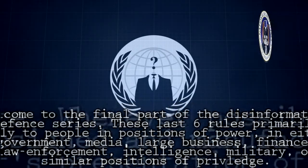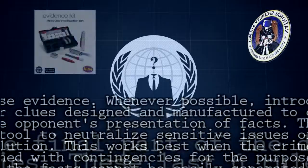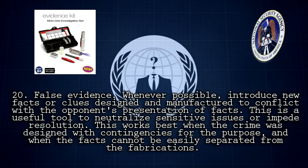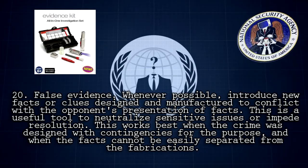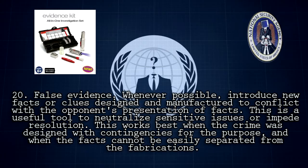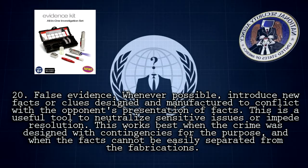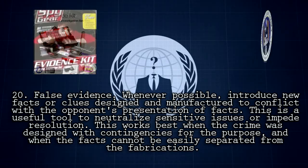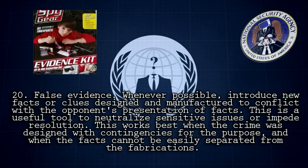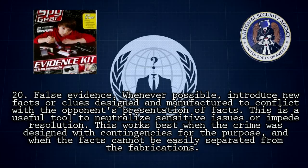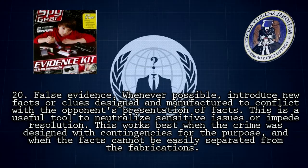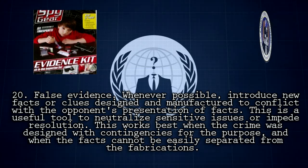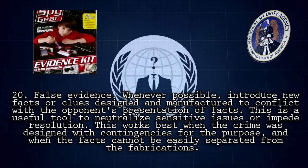Rule 20: False Evidence. Whenever possible, introduce new facts or clues designed and manufactured to conflict with the opponent's presentation of facts. This is a useful tool to neutralize sensitive issues or impede resolution. This works best when the crime was designed with contingencies for the purpose, and when the facts cannot be easily separated from the fabrications.